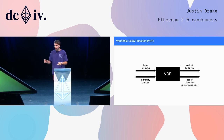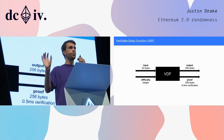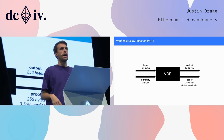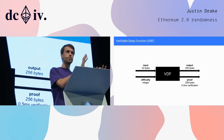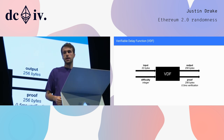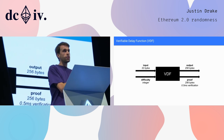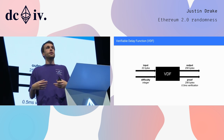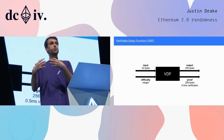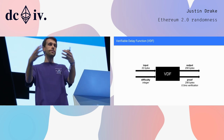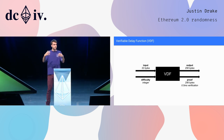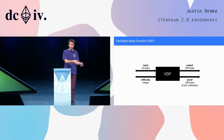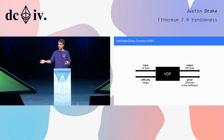We also have a second output, which is the proof — and this is where the verifiable part comes in. Once you've done the computation and have the output, you can also produce a proof and give it to others, convincing them that the output corresponds to the input immediately, without having to do all this sequential work.